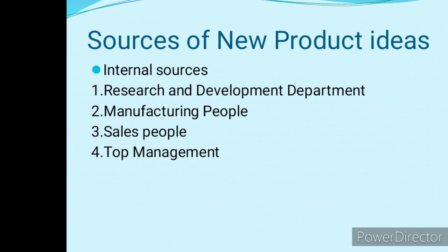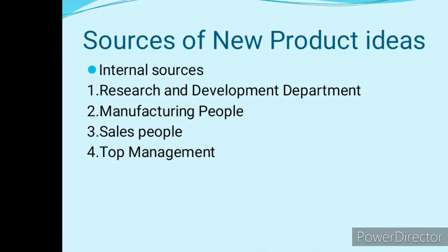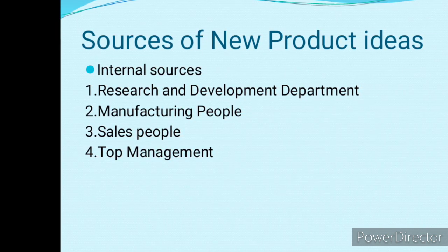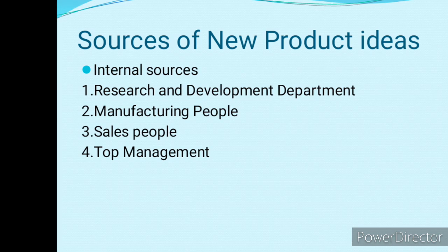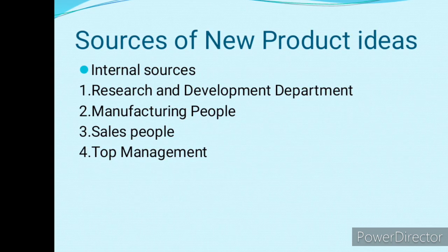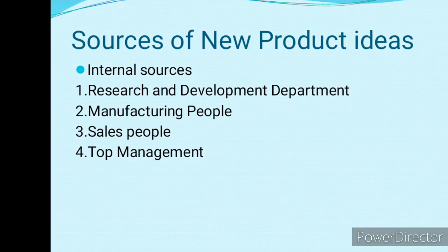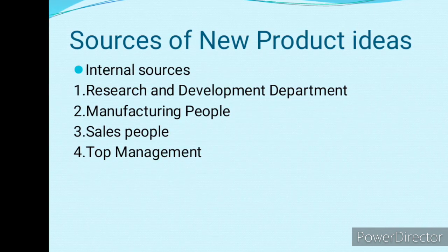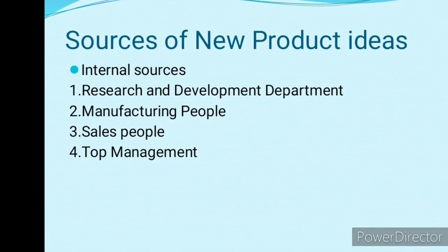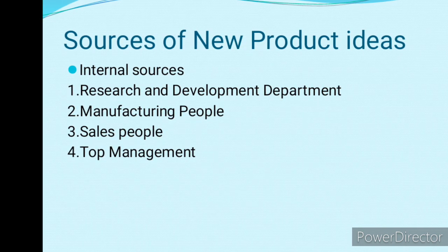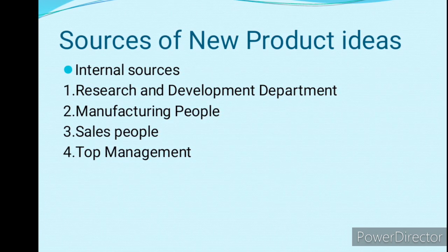Now we will discuss the sources of new product ideas. In the first step we need to develop a new product idea, and basically there are two sources: internal sources and external sources. Internal sources are those which are within the company itself. Internal sources include four main sources: the research and development department, manufacturing people, sales people, and top management.